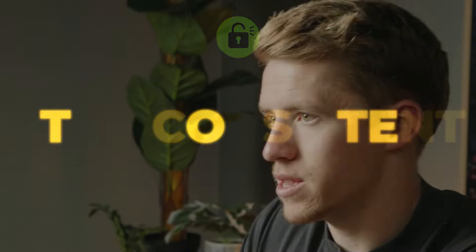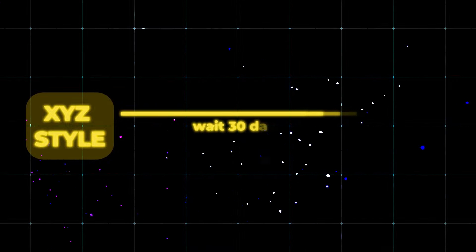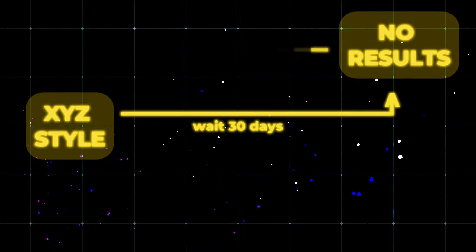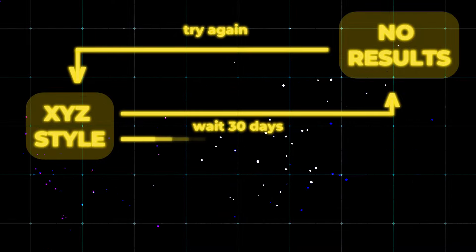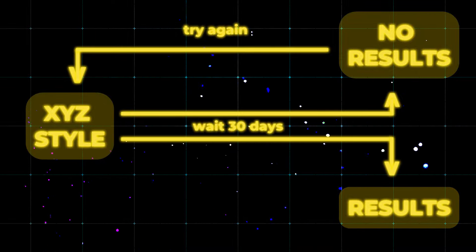The second part is you have to stick to this for at least 30 days of posting. Nothing happens overnight with algorithms, so you need to commit to posting this style of content for 30 days before assessing whether it's working. Too often people jump from one idea to the next without giving them enough time to see results. Commit to it for at least a month before you pivot. If after a month there are zero results, you can try a new style, a new strategy, and have another crack until it hits.